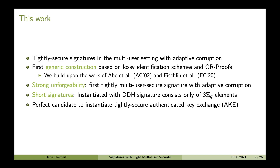Our construction is the first generic construction of this kind and it is based on lossy identification schemes and sequential OR proofs. Signatures from conventional OR proofs were originally proposed by Abe et al. at AsiaCrypt 2002, and further studied by Fischlin et al. at EuroCrypt 2020, and we build upon their work. Our signature scheme is the first tightly multi-user secure signature with adaptive corruptions that is strongly unforgeable, which, especially in the context of authenticated key exchange, gives us a very strong notion of authentication called matching conversations.